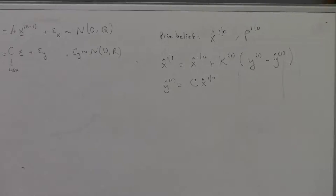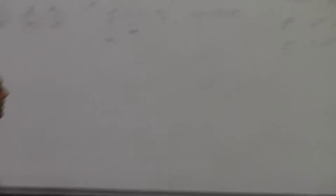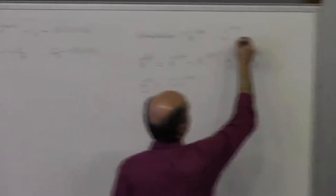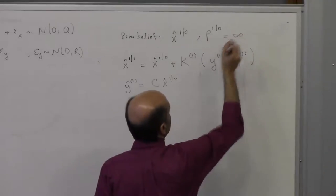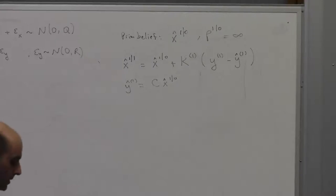Now, what if I don't have a prior belief? I have no idea where I am. I was placed in this location and I don't know where I am. For me, my prior uncertainty is infinity — I could be anywhere. So how do we compute this? How would I be able to compute matrix K and so forth?